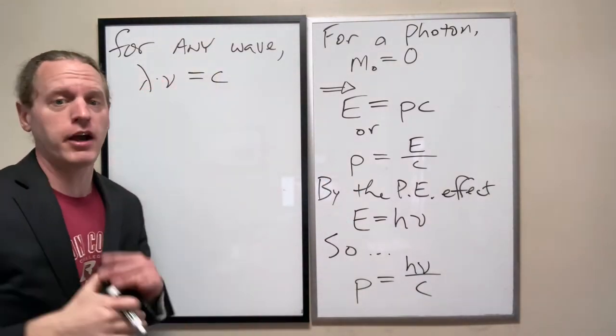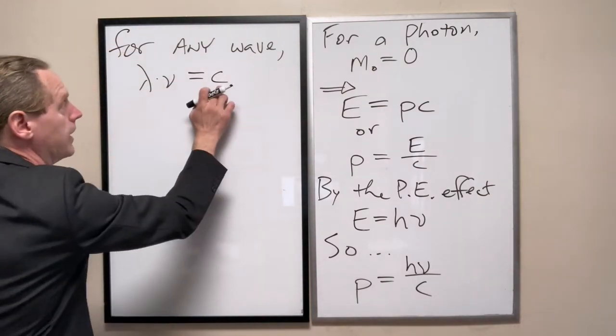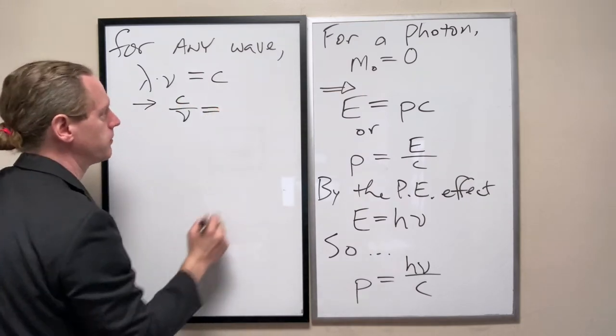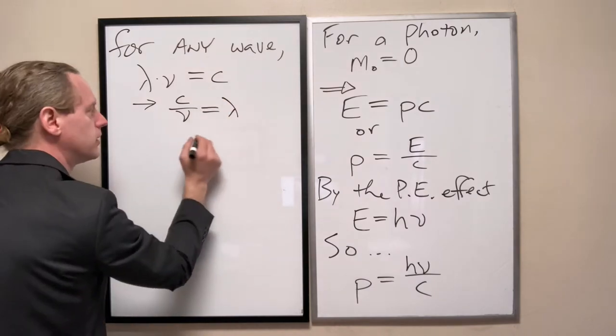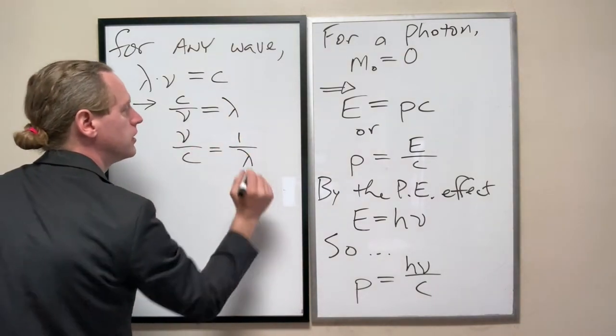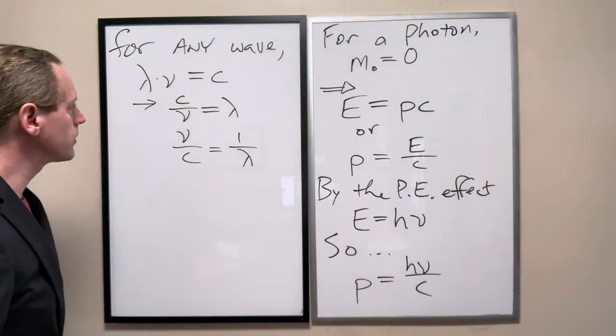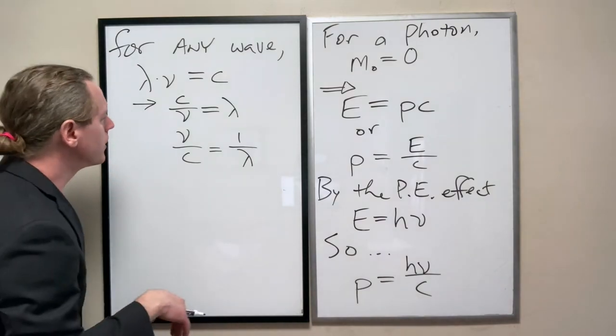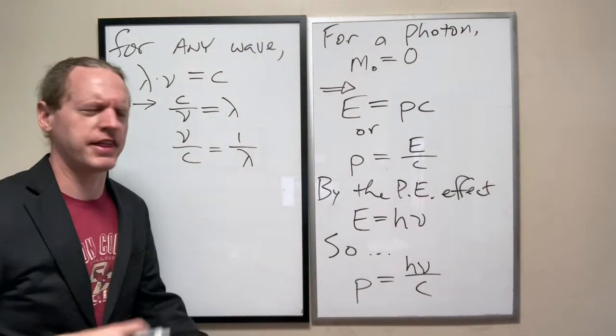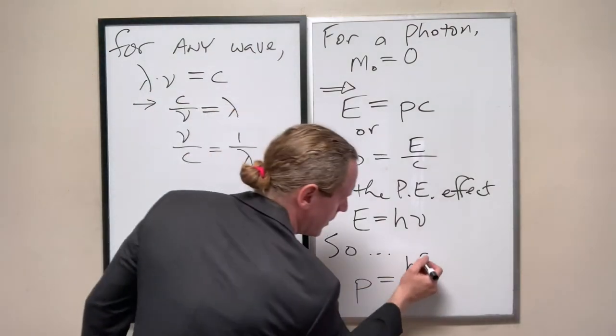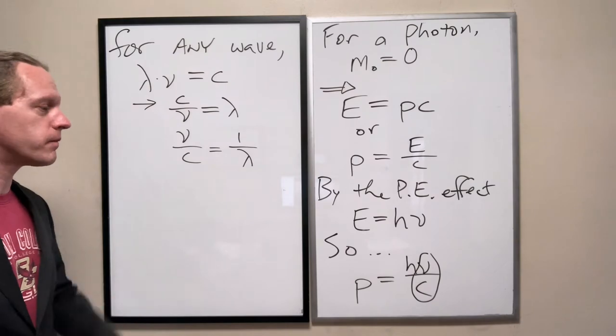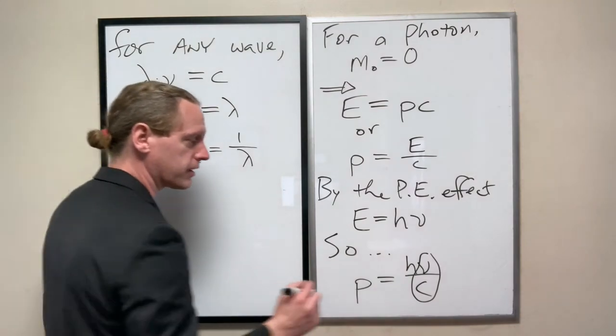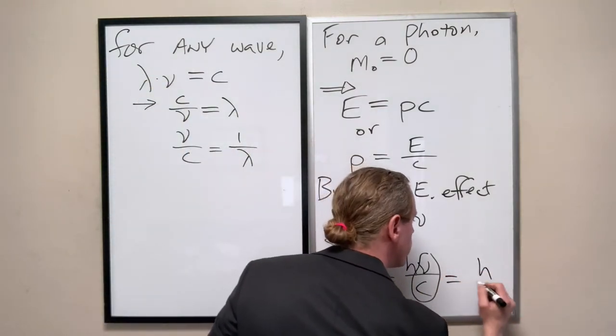I'm now just going to change that to C because we are directly describing photons. We can therefore slightly rearrange it and say that C over ν is exactly the same thing as λ. Or inversely, λ over C is the inverse of a wavelength. At this point, I'm just going to substitute ν over C for the inverse wavelength. This now becomes simply just H over λ.